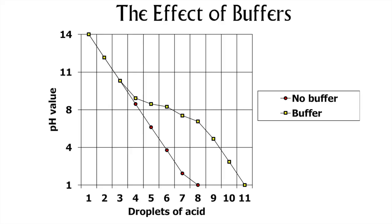This graph shows the effects of a buffer on a solution. In an unbuffered solution — the line with the red circles — we see that as the experimenter adds more droplets of acid, the pH drops at a consistent and linear rate. In the buffered solution, with the orange-yellow squares, at around pH 9, as we add the droplets of acid, the buffer molecules start absorbing protons, which slows the rate of pH decline.